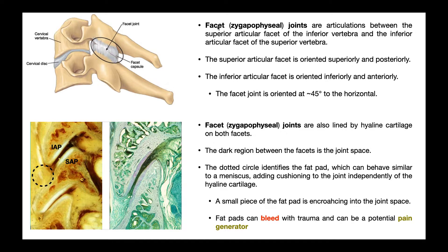In this video we're going to be talking about facet joints in the cervical spine. Facet joints are synovial joints that are also called zygapophyseal joints. Generally speaking, it's an articulation between the inferior articular facet of the vertebra above and the superior articular facet of the vertebra below. The superior facet faces upward, so it has to be on the vertebra below, while the inferior facet faces down and is on the vertebra above. This white tissue is the facet joint capsule, and inside the joint we're going to have features of a synovial joint.